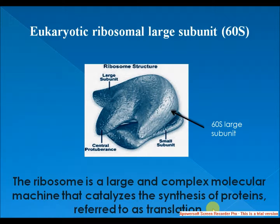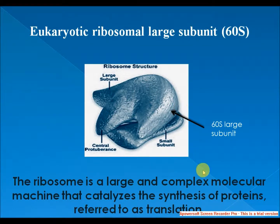Regarding the overall structure of the 60S ribosomal subunit, there are three binding sites for tRNA: the A site, P site, and E site at the small subunit. The core of the 60S subunit is formed by the 28S ribosomal RNA, abbreviated 28S rRNA, which is homologous to the prokaryotic 23S rRNA.